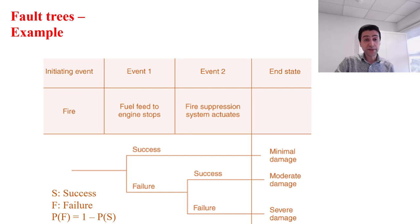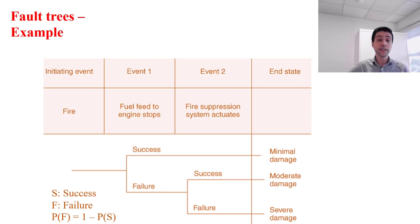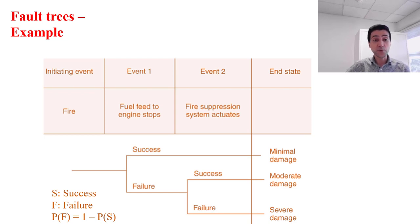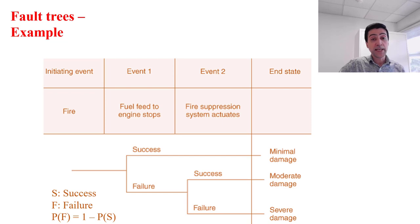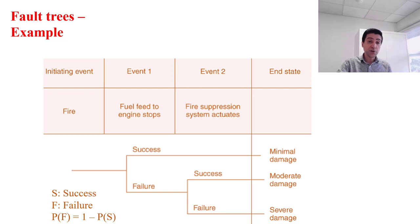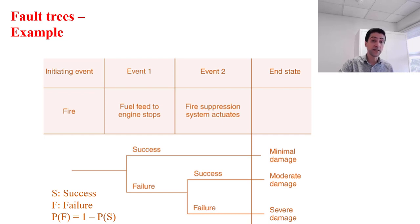Here is a fault tree example. The initiating event we are considering is a fire, or risk of fire. There are a couple of intermediate events, including controls: stopping fuel feed to the engine and the fire suppression system. For each event, success and failure are specified, and we know that the probability of failure is always one minus the probability of success.